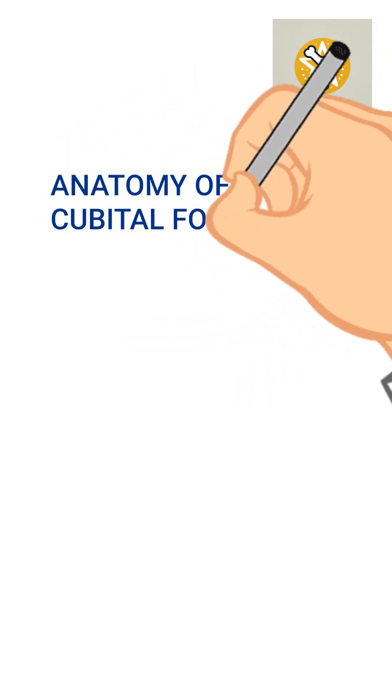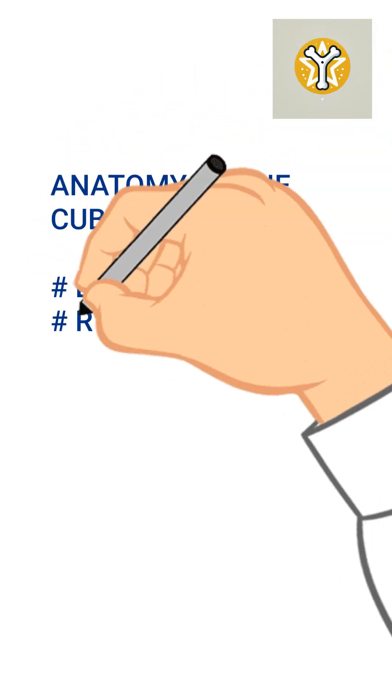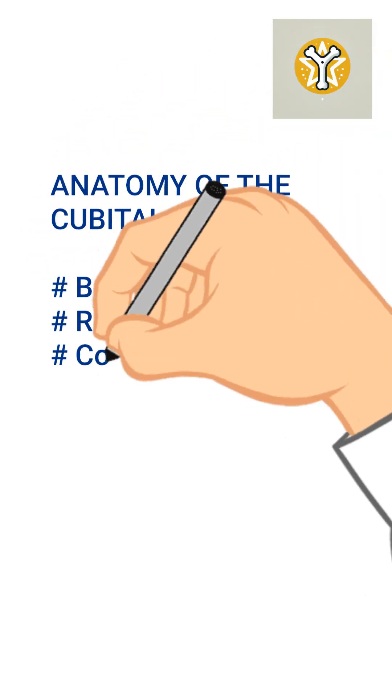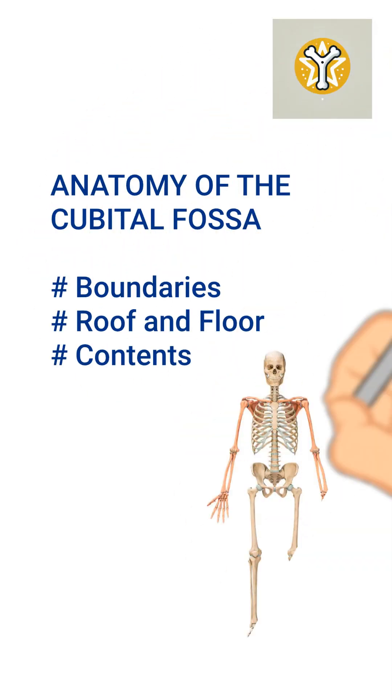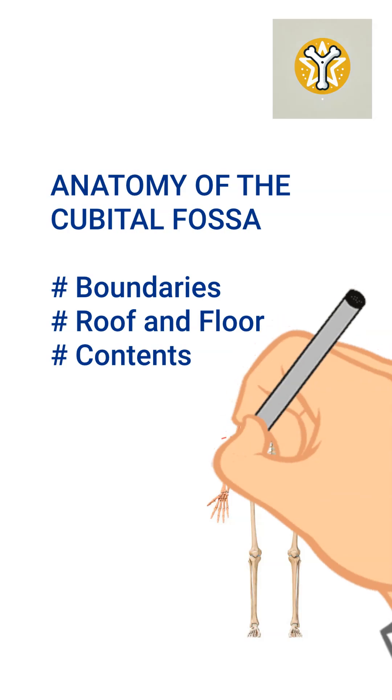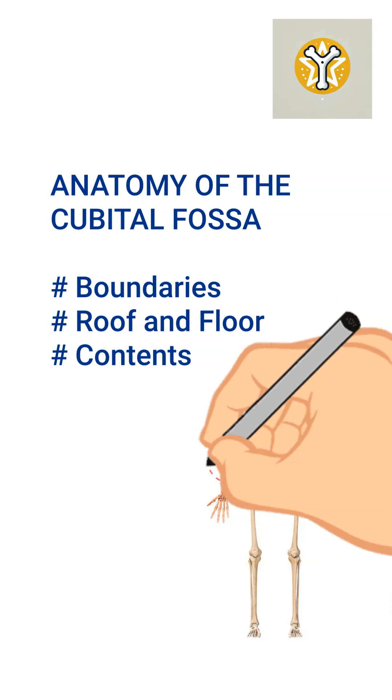Let's break down the cubital fossa, a key triangular zone at the anterior aspect of the elbow.